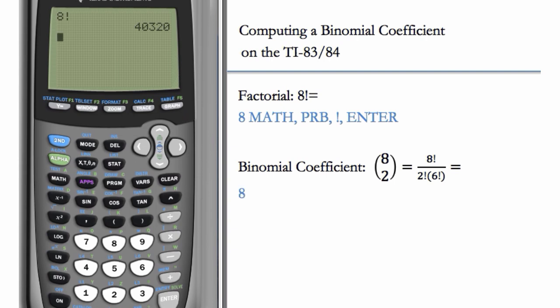First we enter the top number, which is 8, then go to MATH, PRB, and choose the one that looks like nCr, N choose R. Then enter the second number, which is 2, and hit enter.